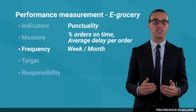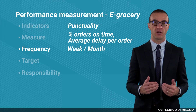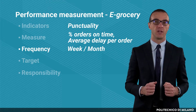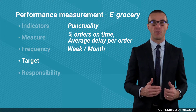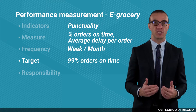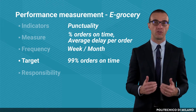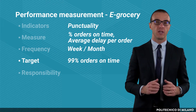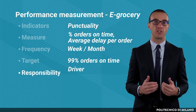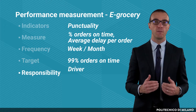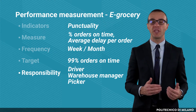This choice depends on the trade-off between the amount of information and the costs. The target could be set, for example, to 99% of orders on time on the total delivered orders. In the case of punctuality, the person in charge could be the driver. If we instead consider accuracy, it could be the picker.